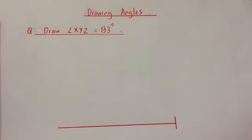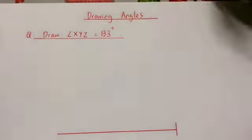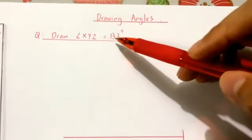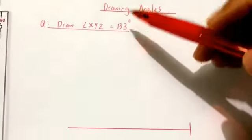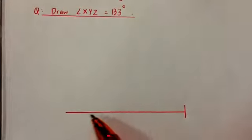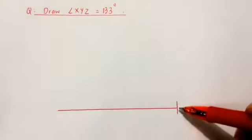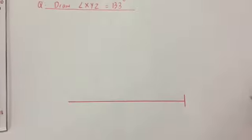In this video we're going to look at another example of how to draw angles. Let's say I want to draw an angle XYZ that is 133 degrees. So I start with a straight line, a small line here. I label this to be zero.